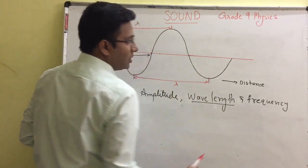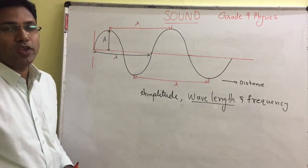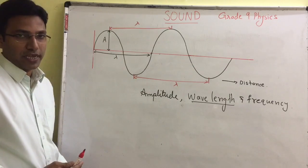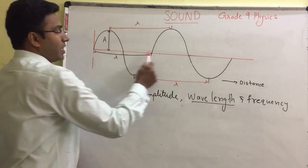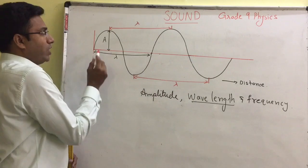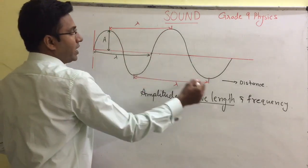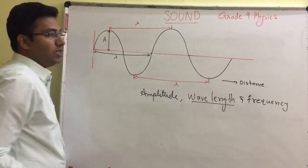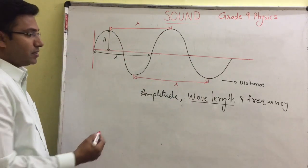Now let us look at frequency. Frequency means the number of waves in one second. If we consider the horizontal axis as the time axis and we count two waves in this diagram — first wave, second wave — then in this case the frequency is two hertz.